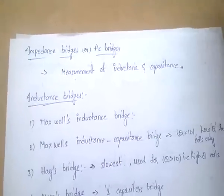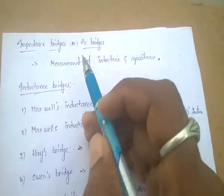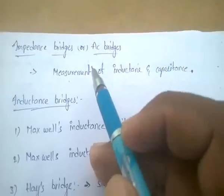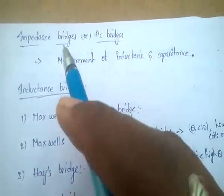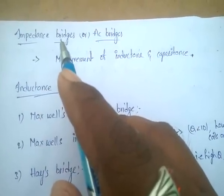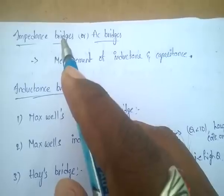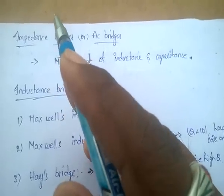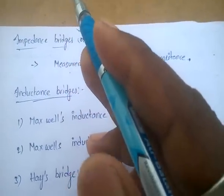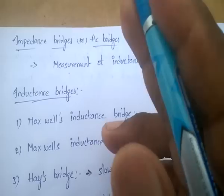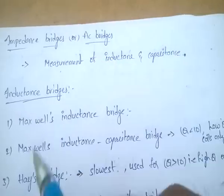Next topic: impedance bridges or AC bridges. These impedance bridges or AC bridges are mainly used to measure inductance or capacitance, frequency, Q factor, and D factor.